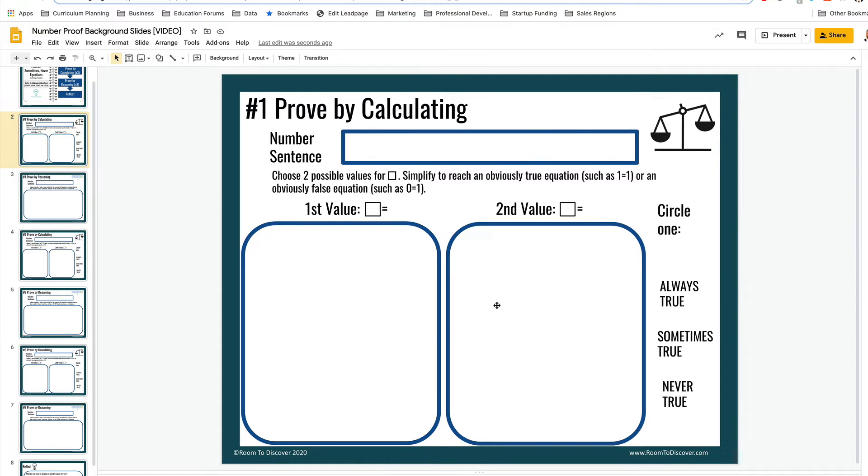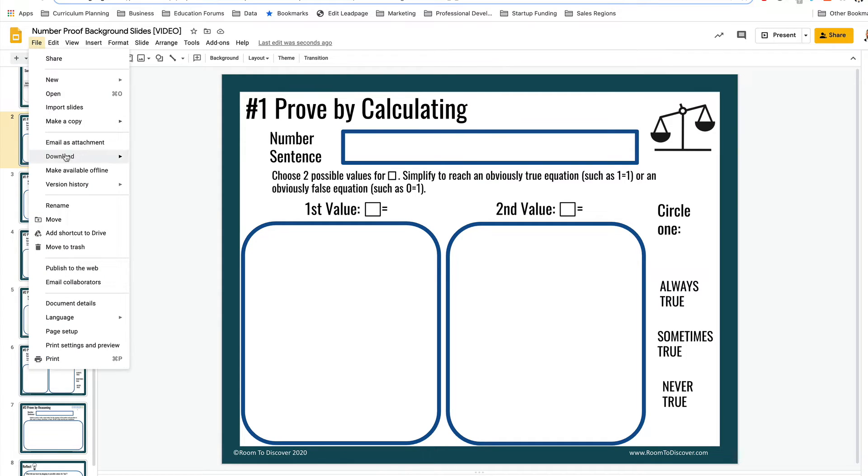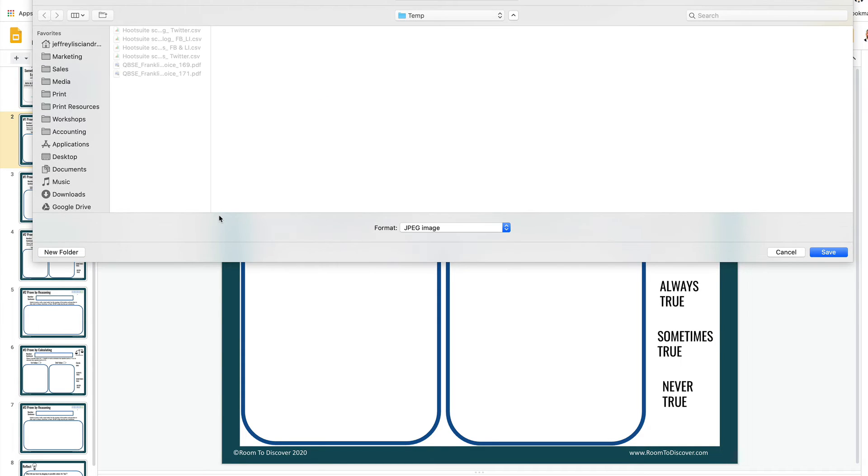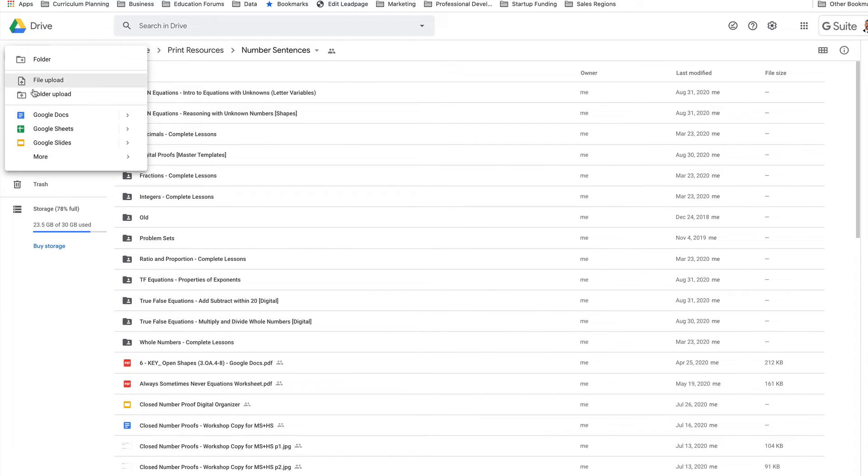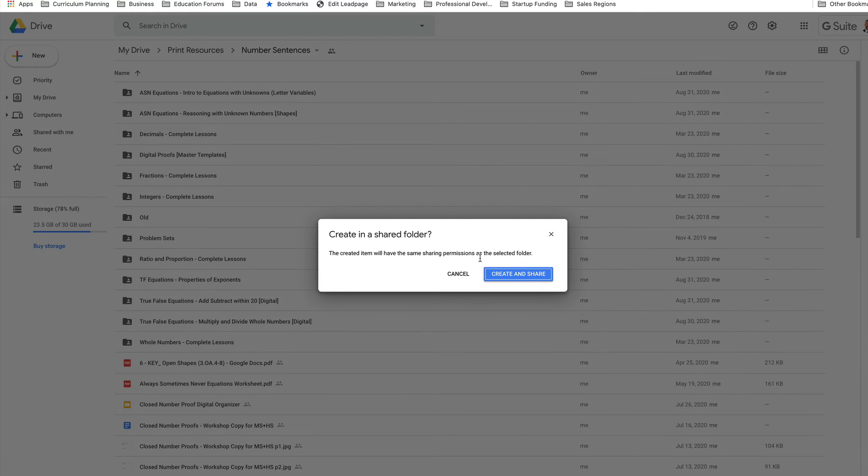So once I'm comfortable with the background, I'm actually going to go up to my File menu, choose Download. And I'm going to download as a JPEG or a PNG. Basically I'm exporting this as an image. And once I've saved all of my background slides as JPEGs, now I go back and I create another new Google slide document.